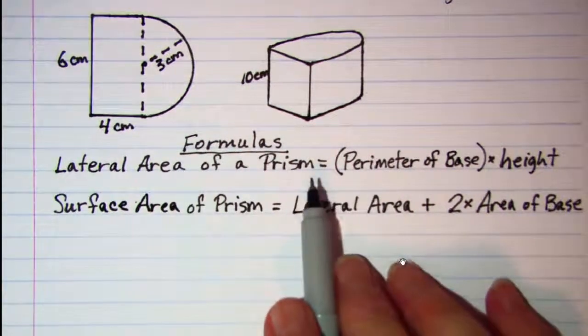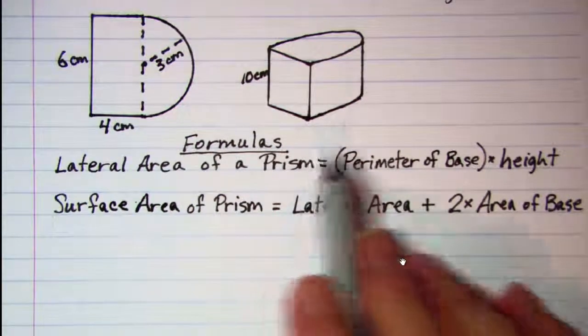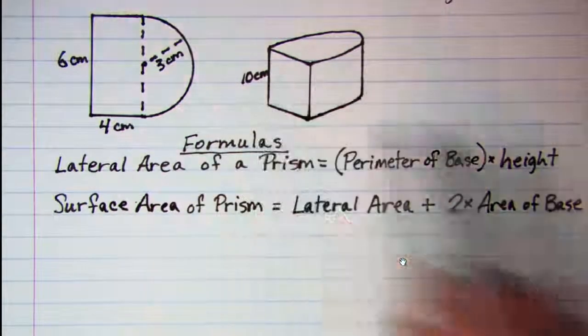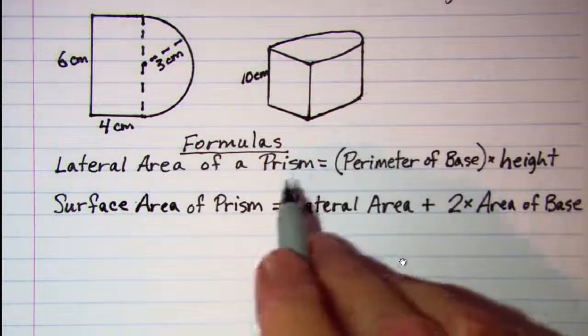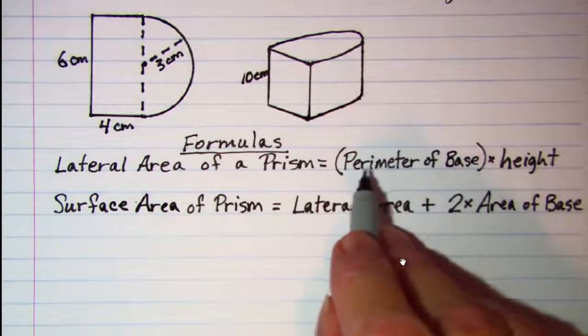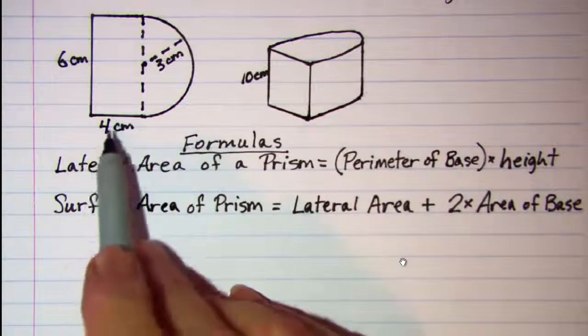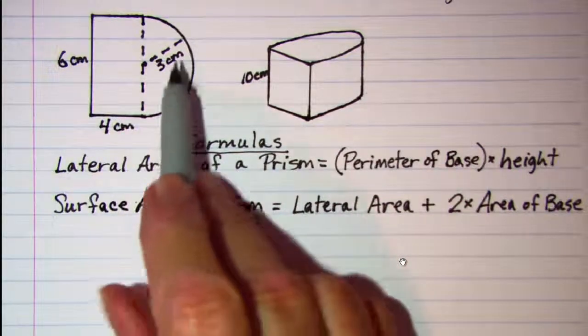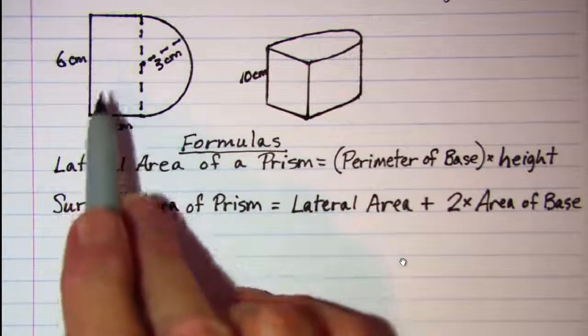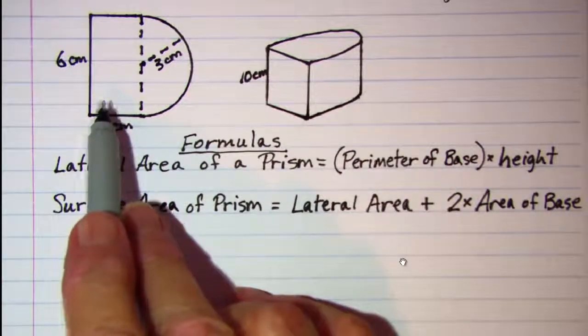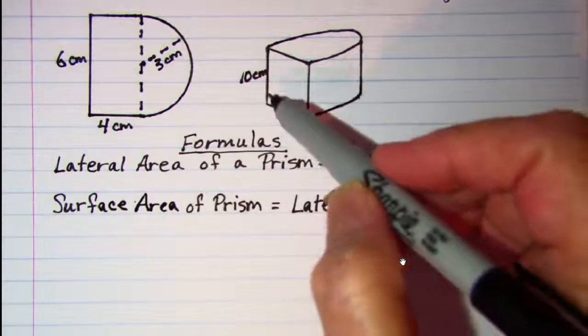So since this is a prism that is a little bit different from the one I showed you, we will just use these formulas. Because the perimeter of the base, we will have to use the perimeter around the edge here and then multiply that by the height of the prism.